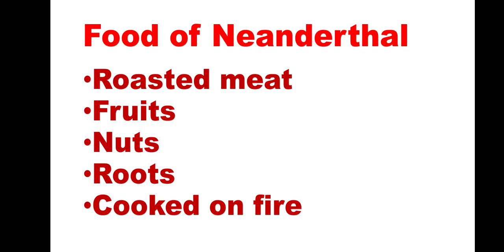What was the food of Homo Neanderthal? These people came to know how to use fire to roast meat, and they started cooking. Though they did not have sufficient spices, they used to roast the meat. The advantage of roasting meat was that it changed the taste and it was easier for them to digest.